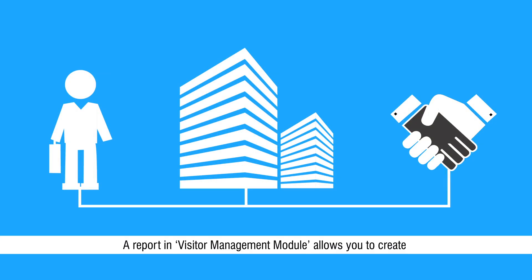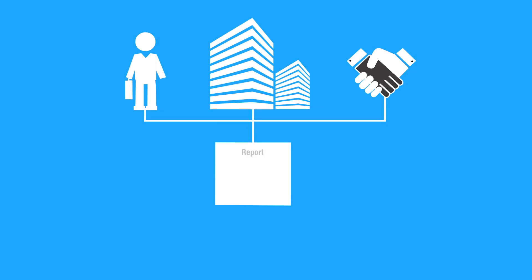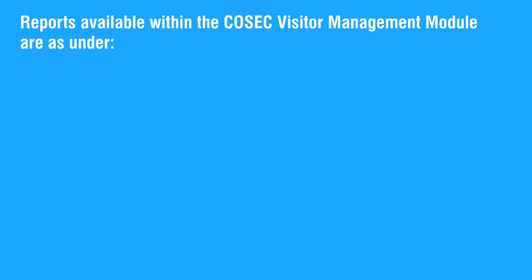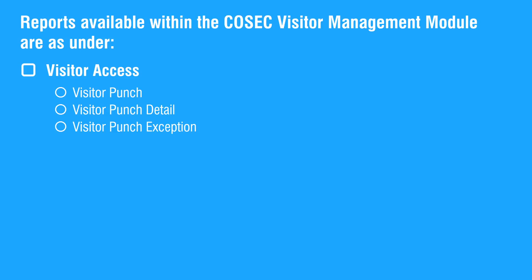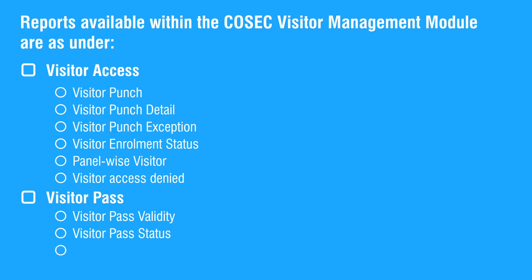A report in the Visitor Management Module allows you to create and view detailed reports on visitor activities on your site. Reports available within the Cosec Visitor Management Module are: Visitor Access, Visitor Punch, Visitor Punch Detail, Visitor Punch Exception, Visitor Enrollment Status, Panel-wise Visitor, Visitor Access Denied, Visitor Pass, Visitor Pass Validity, Visitor Pass Status.